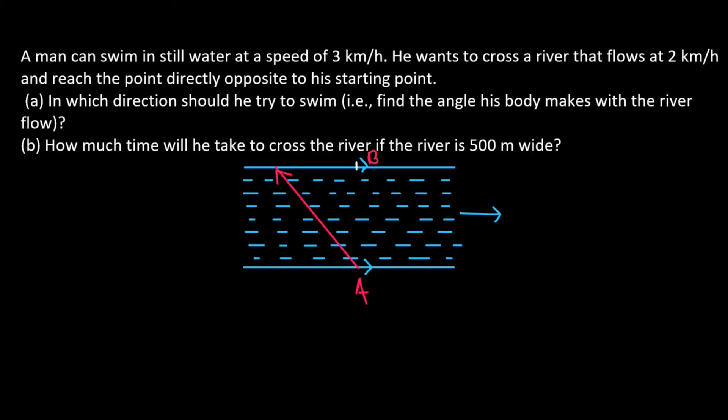Here, I will give this point a name. Let's call it C. So, if the velocity of the man with respect to the river is in the direction of AC, then he will reach the point exactly opposite to A. That is, to B.